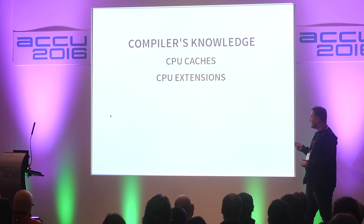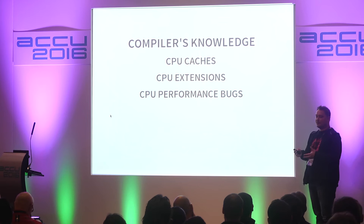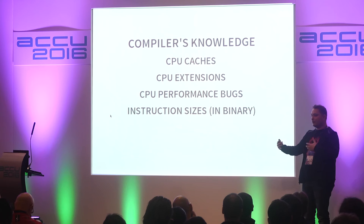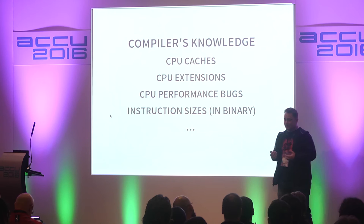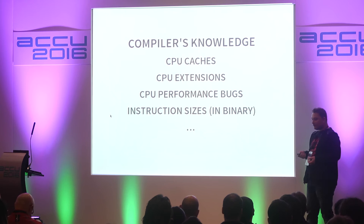The reason is data dependency, which can make it slower. A lot of knowledge about optimization has already been put into compilers. The compilers know a lot about CPU caches, CPU extensions, and also some CPUs have performance bugs for certain instructions — the compiler will know about this, but we might not. The point is that the compiler looks at everything from different points of view, and it's very hard for a human to write an application that outperforms one generated by a compiler.